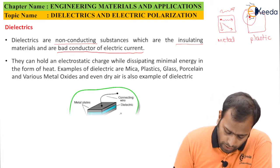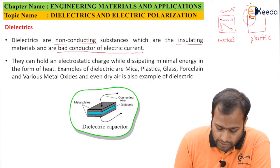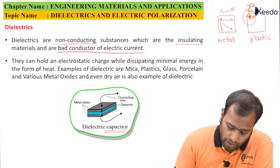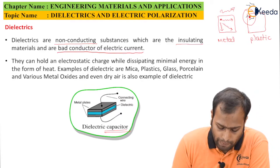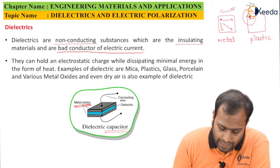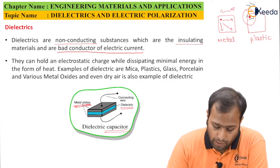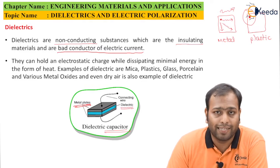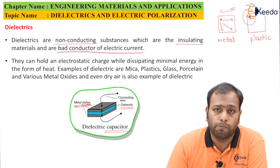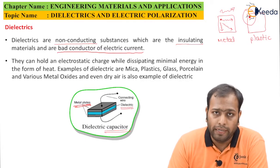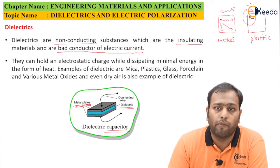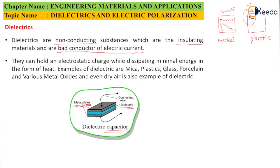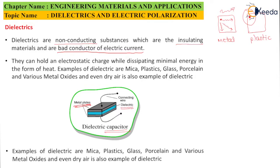In a dielectric capacitor — we've already studied what a capacitor is in the previous class — there are two metal plates and a dielectric material, shown in blue, which separates them. It has two roles: first, it does not allow a direct short circuit between the metal plates which might cause sparking; it also provides a medium to store electric energy in the form of an electric field. Examples of dielectrics include mica, plastic, glass, porcelain, and various other metal oxides.